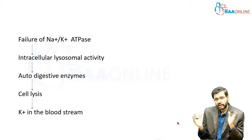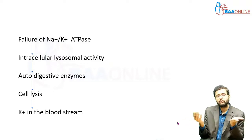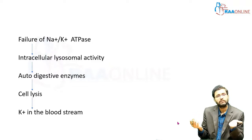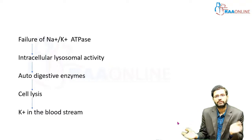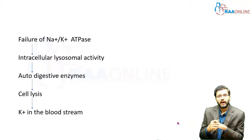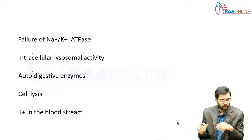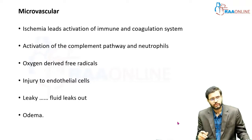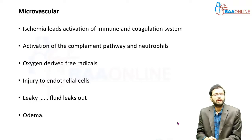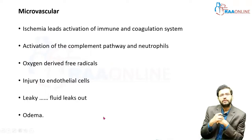These autodigestive enzymes lyse the cell. When the cell lyses, what is present within the cell comes out. The most common intracellular electrolyte is potassium, so this potassium enters into the bloodstream. Potassium in the bloodstream is not a very good thing — it can affect the heart and produce a lot of systemic features. That is what happens at the cellular level.